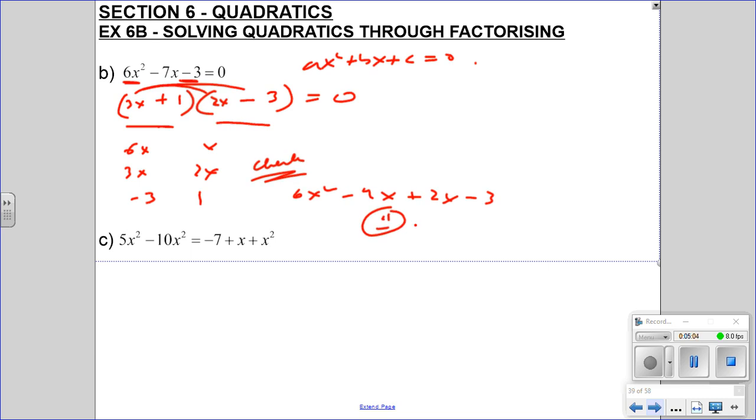Therefore we can go on to say that 3x plus 1 equals 0, or 2x minus 3 equals 0. And therefore x must be minus 1 third, and x must be 3 over 2. So we are happy with that. That's what it means by solve - finding the values of x that make that work.